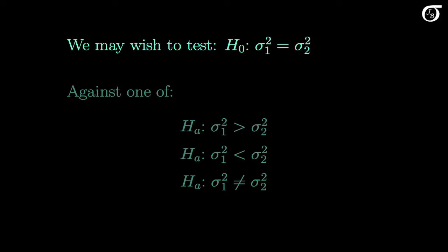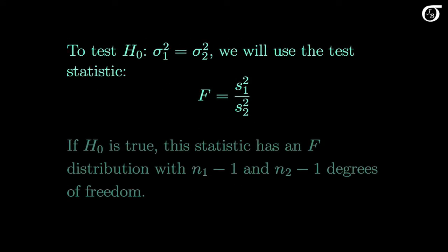We may wish to test the null hypothesis that the population variances are equal. We could test other hypotheses, like the hypothesis that sigma 1 squared is equal to 4 times sigma 2 squared, but a test of equality of variances is the most natural test that arises. We'll use one of three alternative hypotheses. As per usual, the appropriate choice of alternative hypothesis depends on the problem at hand, and we'll use the two-sided alternative hypothesis unless we have a strong reason to be interested in only one side. To test the null hypothesis that the population variances are equal, we use the F test statistic that is simply the ratio of sample variances. If the null hypothesis is true, the population variances are in fact equal, and the normality assumption holds, this test statistic will have an F distribution with n1-1 and n2-1 degrees of freedom. So we will get the p-value for the test using the F distribution.